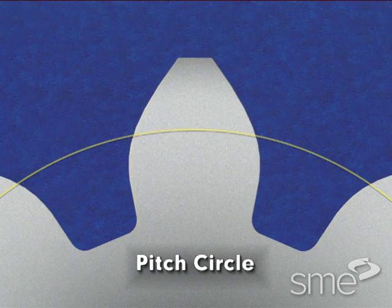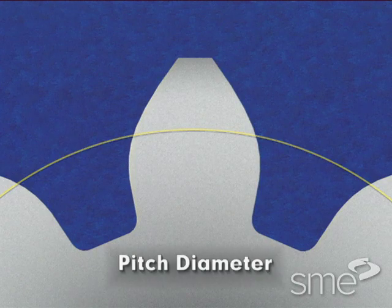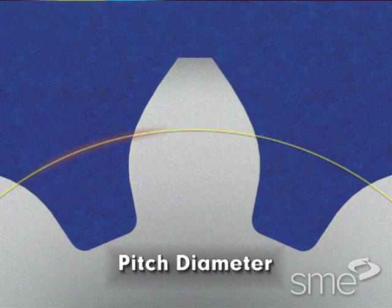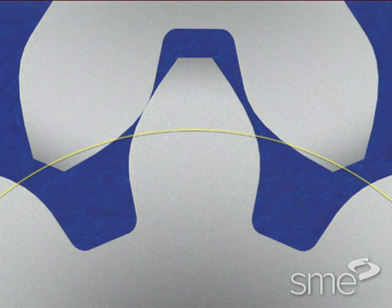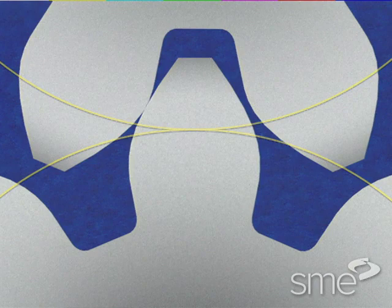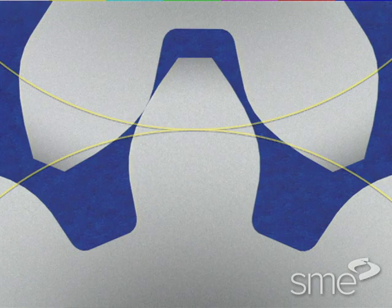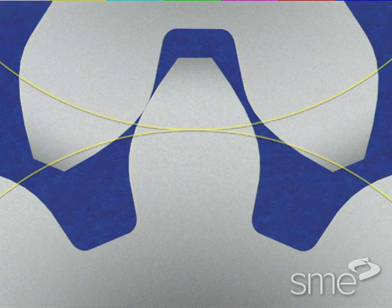The pitch circle, which is also referred to as the pitch diameter, is the imaginary rolling circle of a gear. The pitch circle dimension is important since the pitch circles of mating gears intersect each other. The pitch circle is also the dimension from which most other gear measurements are made.